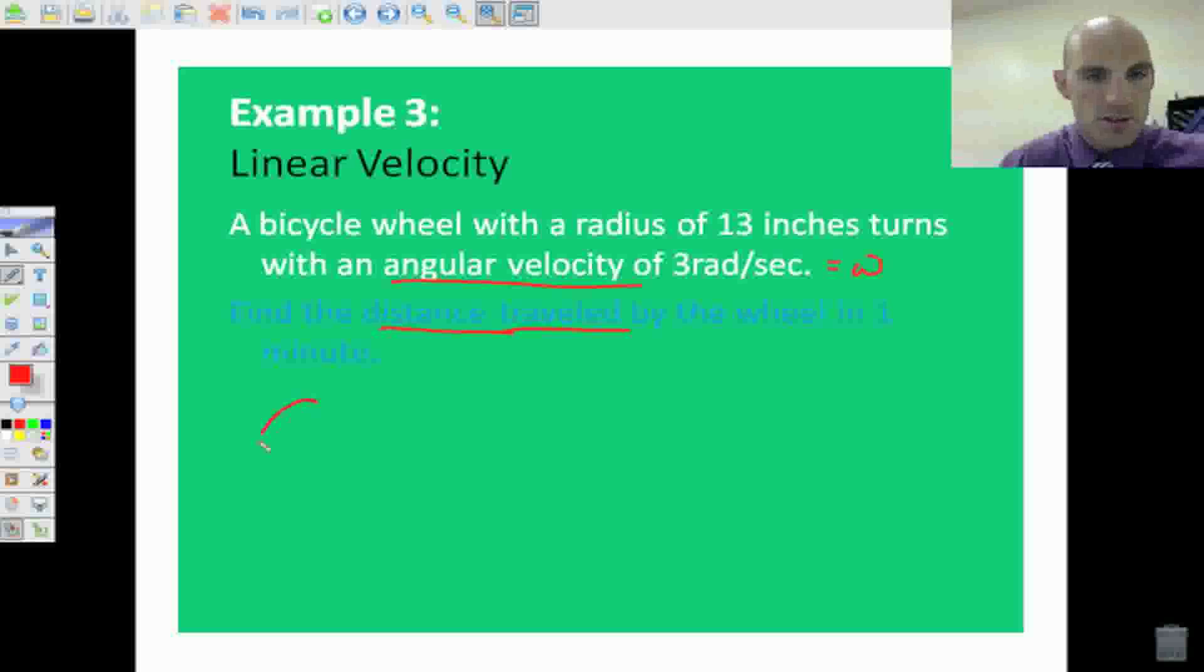So let's imagine that we have this bike wheel here. It's got spokes. And what we're asking is, if I put a point on this bicycle wheel, and it's going around this way, how far is it going to travel in a minute?